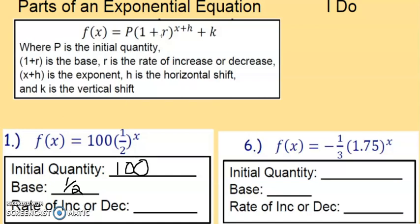We have 1 plus r where r is the rate of increase or decrease. 1 minus 1/2 is 1/2. So that means that r equals negative 1/2. Basically it decreases by 50%. They might say decrease by 50%, they could say halves, anything like that.